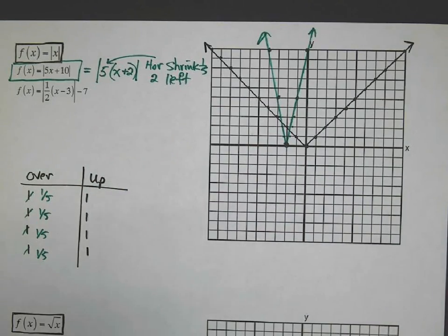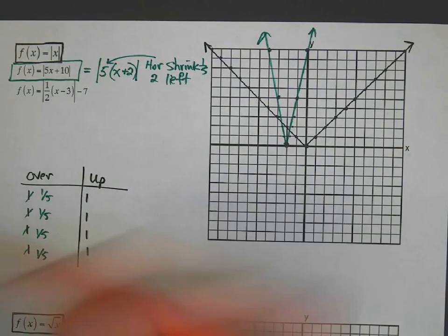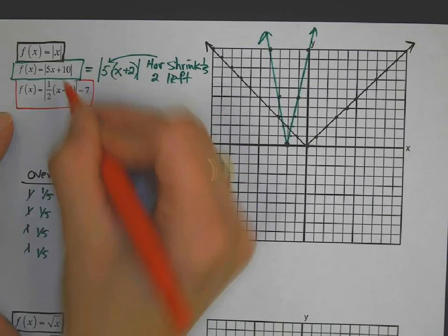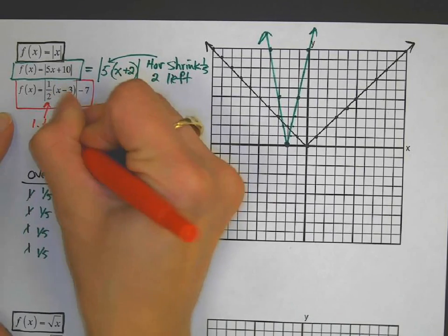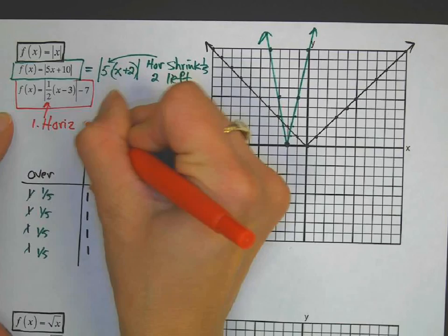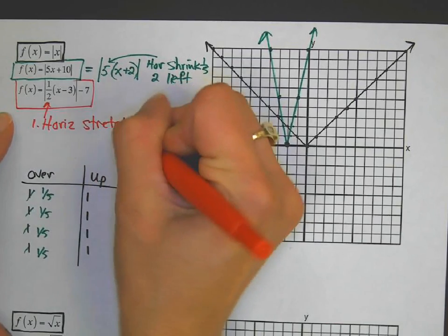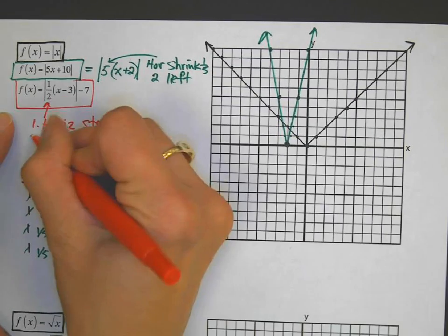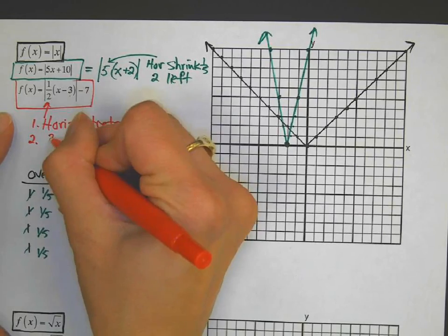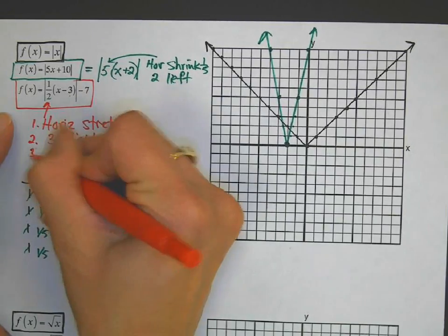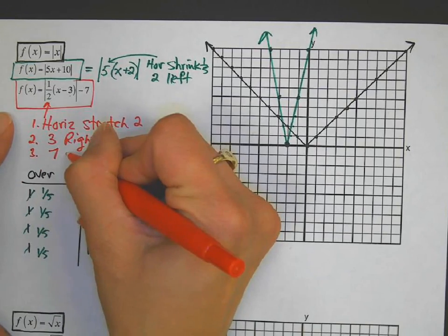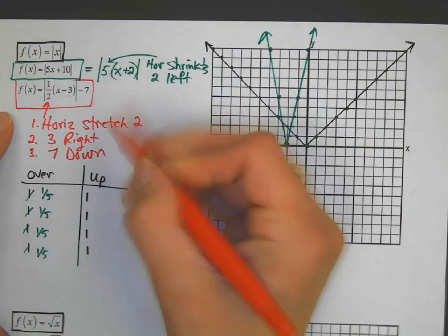All right. We've got one more here. This one looks like it might be already factored for us. Perfect. There's three steps here that need to happen. Step one, this one needs to get horizontally stretched by two. Step two, three units to the right. Step three, seven units down.